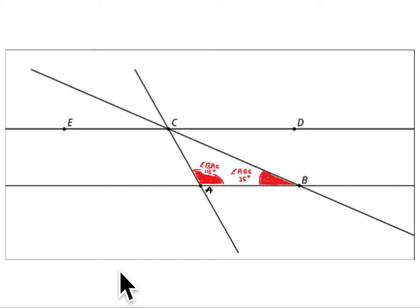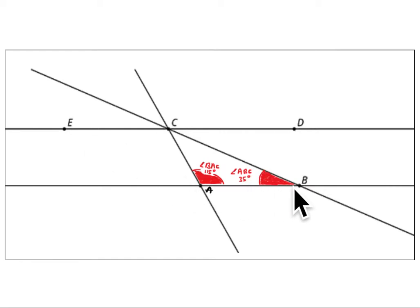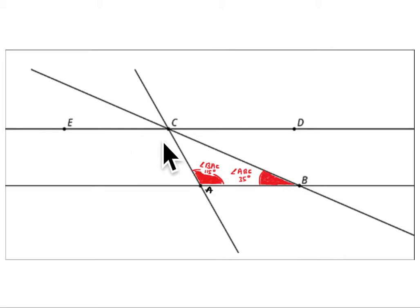The next problem asks for the measure of angle ACE, angle DCB, and angle ACB. These angles fall on a straight line, so they are going to add to 180 degrees.